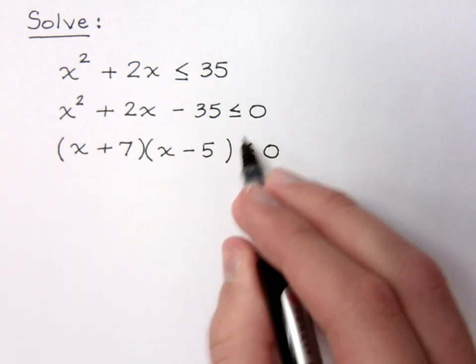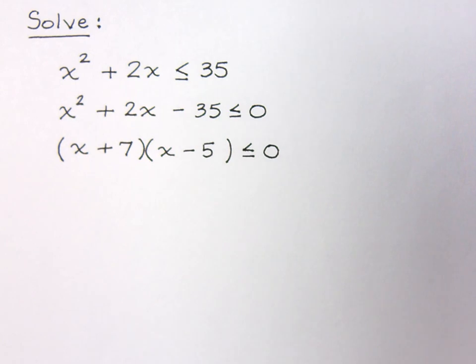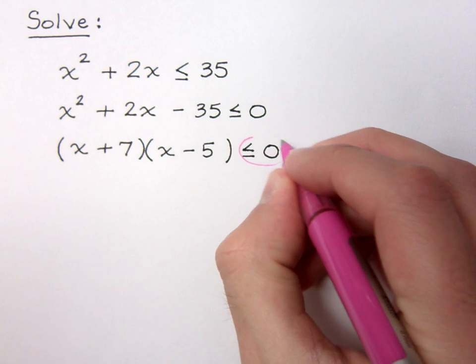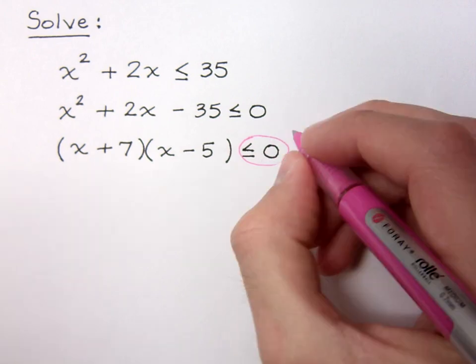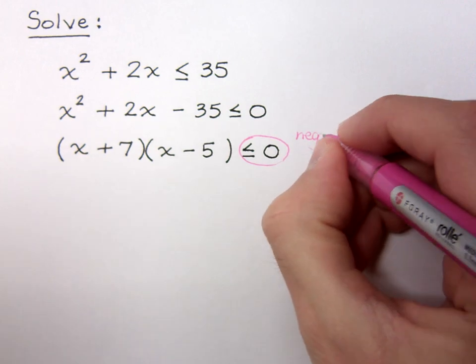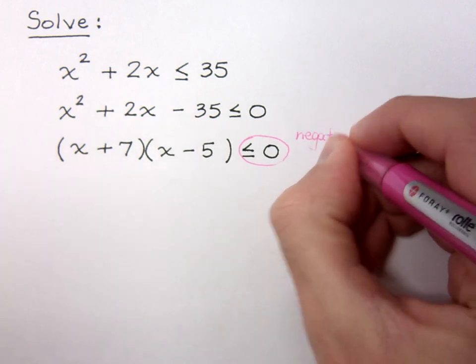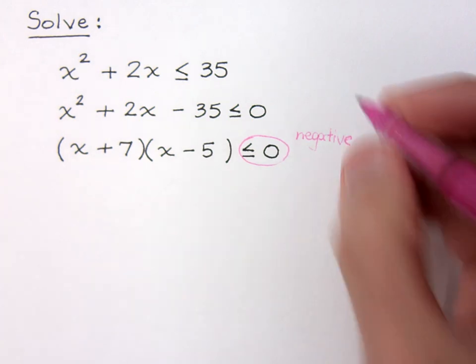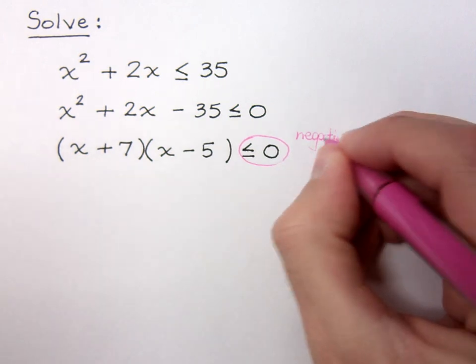Now, don't worry too much about this guy right here. All this guy is telling me right now is that I need all of this stuff right here to be less than or equal to 0, which means I'm looking for values that are negative. I need to find those values that are negative.